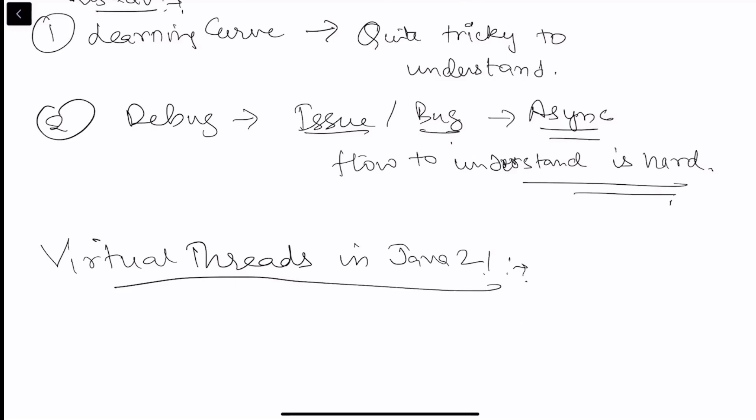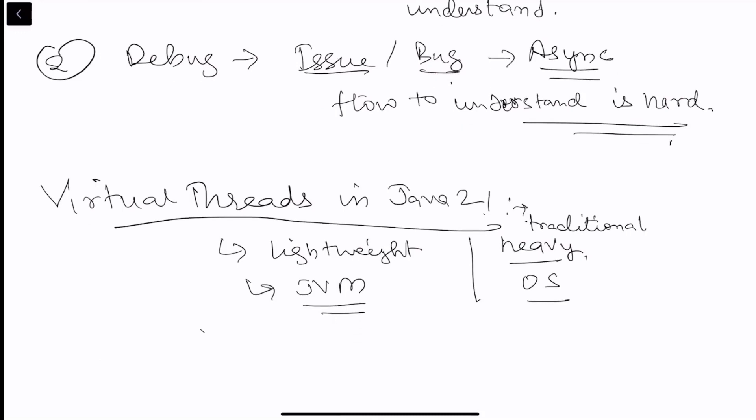So these virtual threads which are currently now being called as the game changer for the concurrent programming. It's unlike the traditional OS threads which are very heavy and are limited by the OS. These virtual threads are very lightweight and are managed by JVM. So the traditional threads were managed by OS and heavy. But now the virtual threads are managed by the JVM. What it results is that you can spin a lot of maybe thousands of threads without even worrying about the overhead. Which was the case in the OS threads. Wherein you had to see the overhead of context switching.